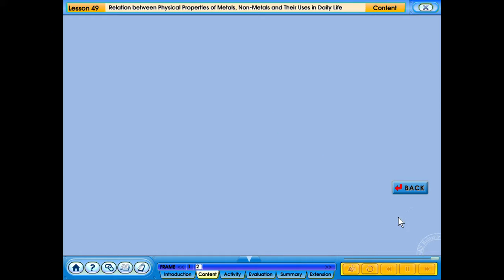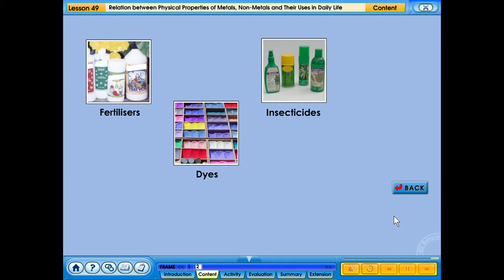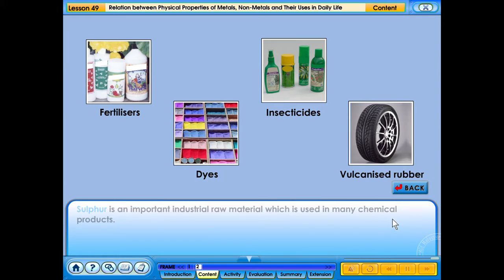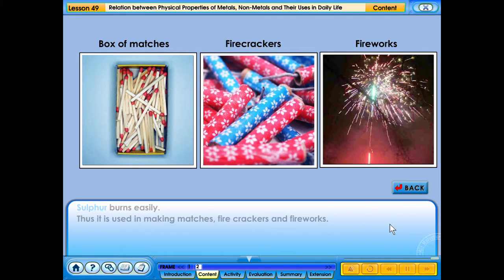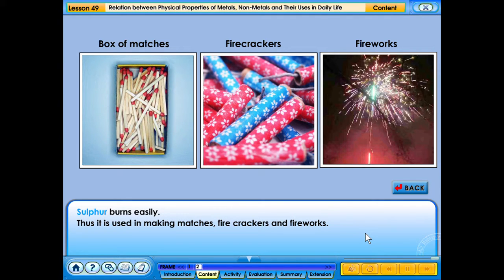Uses of sulphur in daily life. Sulphur is an important industrial raw material which is used in many chemical products. Click on the highlighted word in blue to look at some of these products. Sulphur burns easily. Thus, it is used in making matches, firecrackers and fireworks.